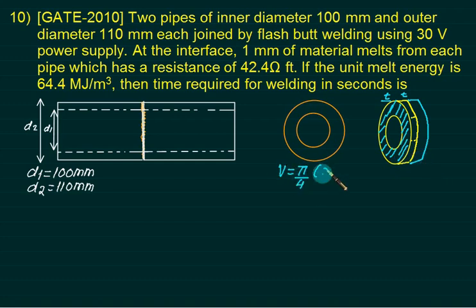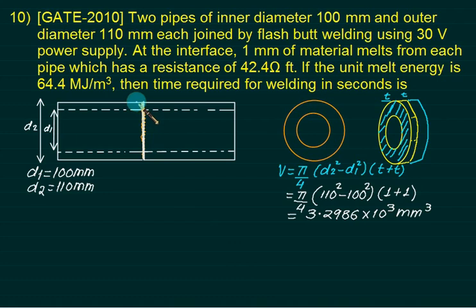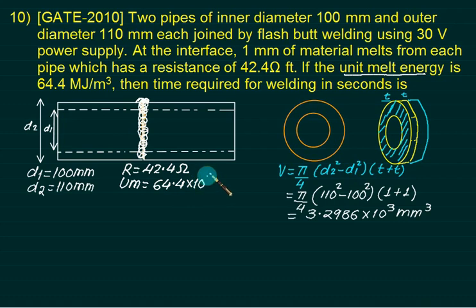So you're getting a ring here of thickness T, of this thickness T and this area. So it's basically cylinder and I have got one more ring. So this is 1 mm and this one is 1 mm. Is this volume pi by 4, D2 square minus D1 square multiplied by 1 mm here and 1 mm here. So is it T plus T? The resistance is 42.4 ohm. In the unit melt energy, we are already familiar with this. Amount of energy required to melt 1 meter cube of this volume is 64.4 mega joules, mega is 10 to the power 6 joules per meter cube.